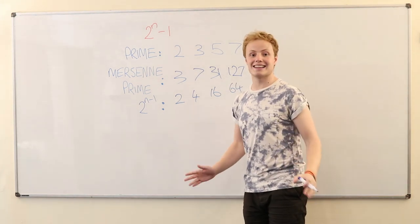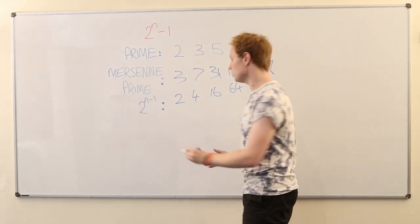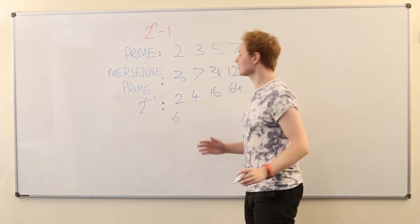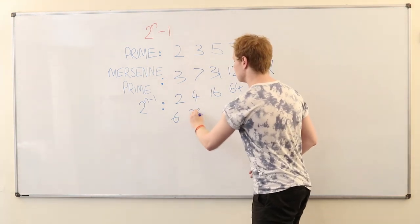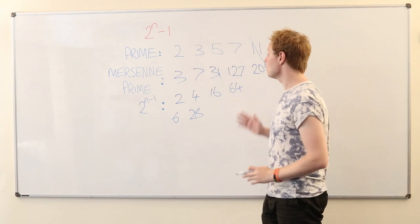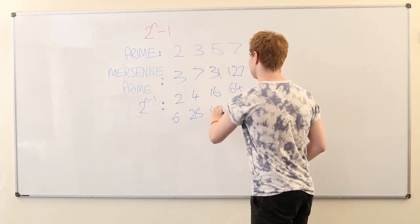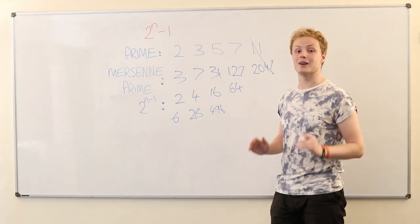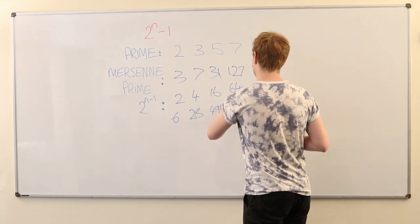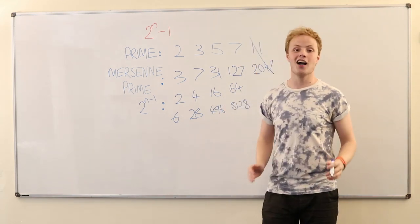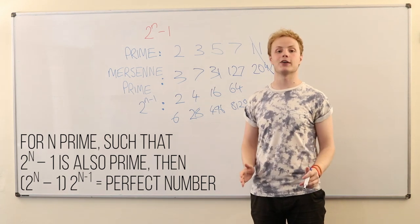So, as Euclid told us, let's give this a go. Let's multiply these two numbers together. 3 times 2, obviously, is 6. 7 times 4 is 28. Already starting to look a little bit familiar. We've got 31 times 16 is 496. And with a bit more brain power, we get 127 times 64 is 8,128. Hopefully, you will have noticed by now that these are, in fact, the first four perfect numbers.